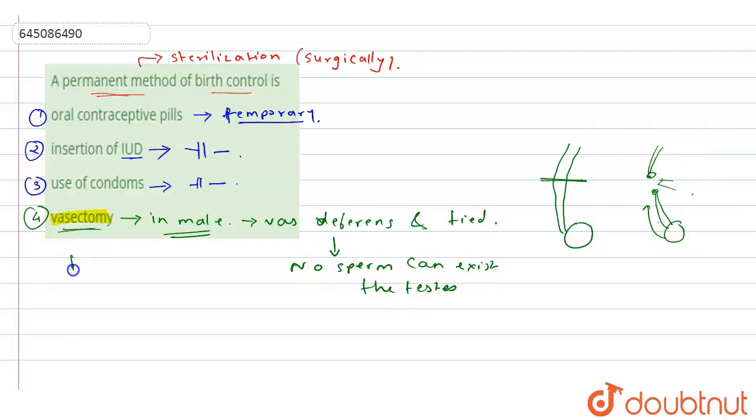And there is another method called tubectomy. Tubectomy is a permanent sterilization method in females where the incision is done in the fallopian tube. So this is our correct option, option 4.